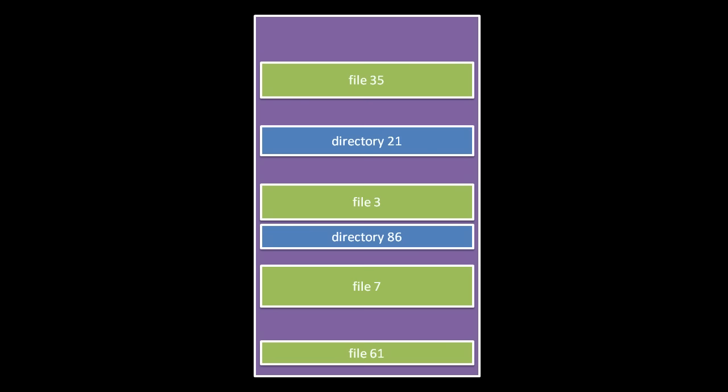In most partition formats used today, each file and directory within a partition is known by an identifier number unique within that partition. So, here we have a partition with a file 35, and we can have no other files within that partition with the ID 35, nor any directories with the ID 35. A file is simply a logically contiguous chunk of data, a sequential series of bytes.